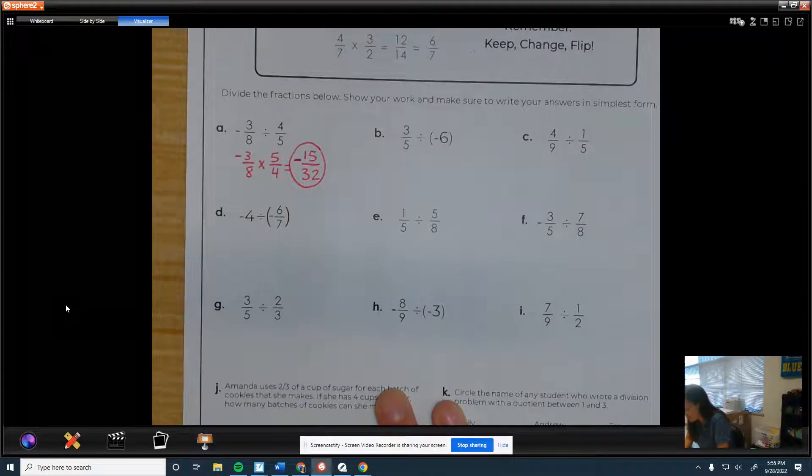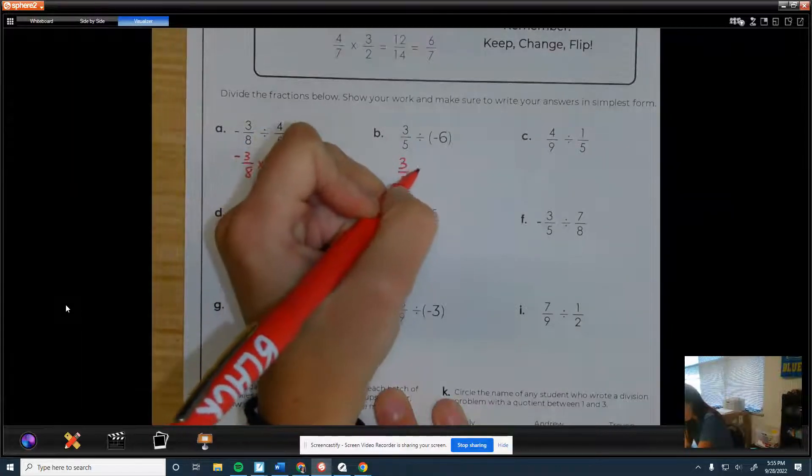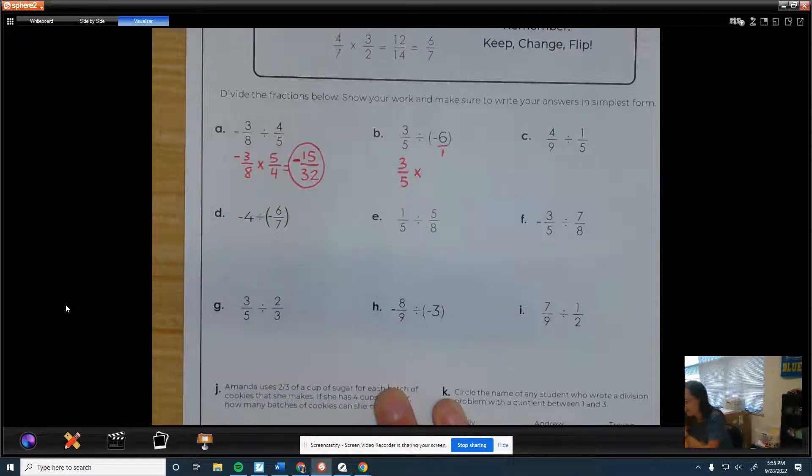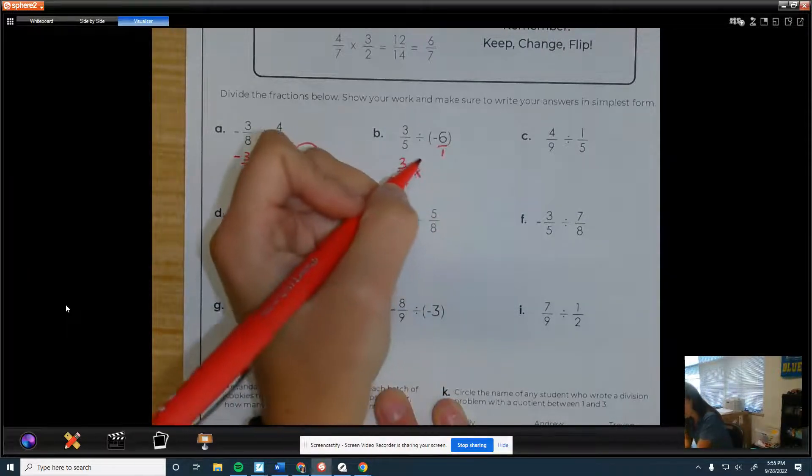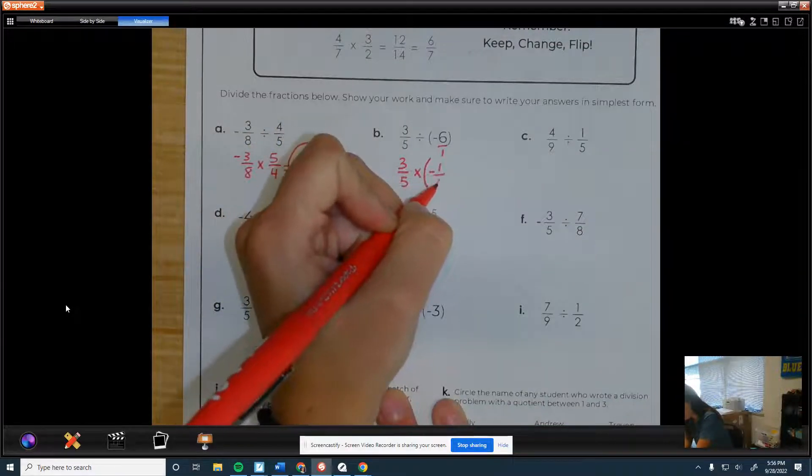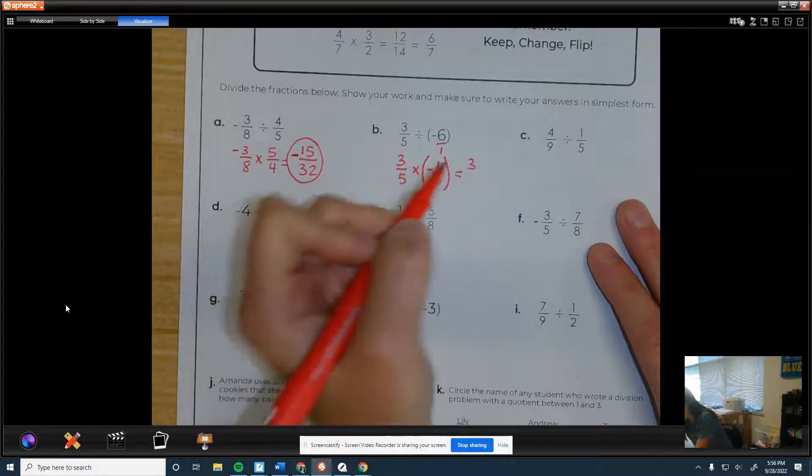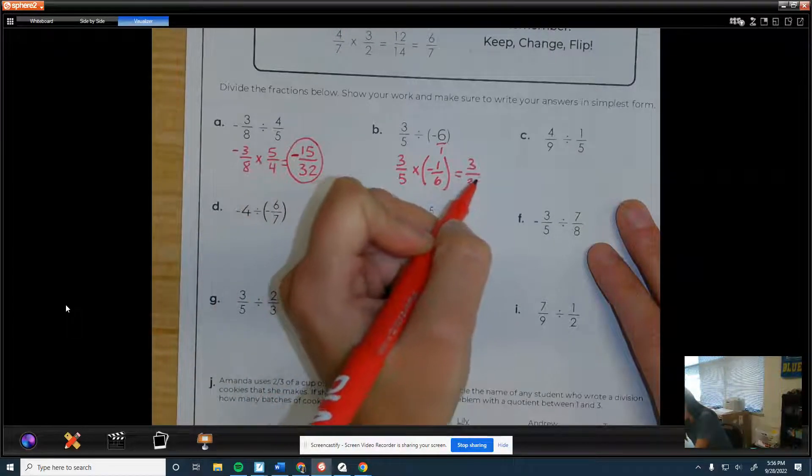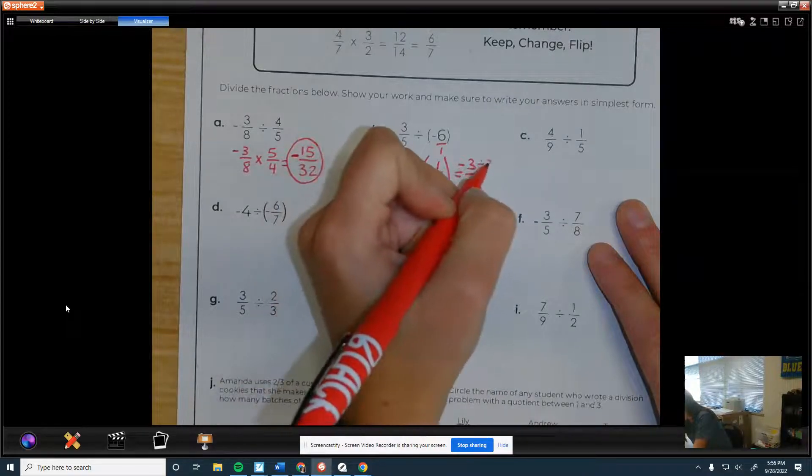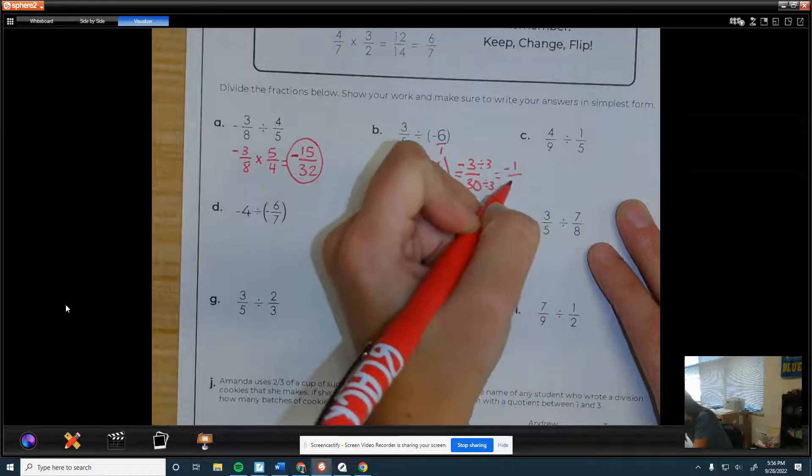First we've got negative 3/8 times 5/4. So that would be negative 15 over 32. I don't think you can simplify that. 15 is divisible by 5 and 3 and 15, but not 32.